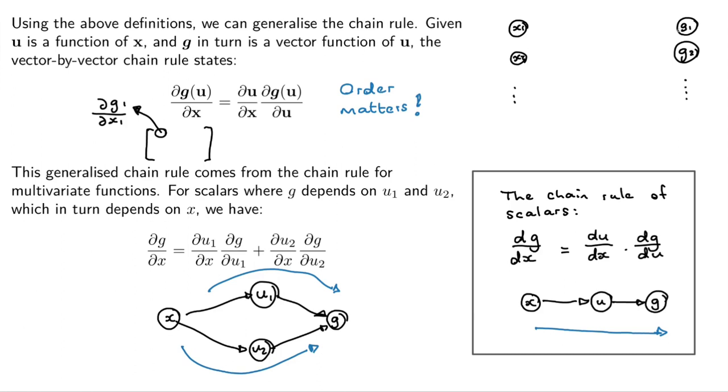Now, the important thing here is that x doesn't touch g directly. Instead, x goes through another vector u. So you've got u1, u2, and so on. So x, this vector, influences u. So u1 is a function of x1 and x2 and x3. And so is u2. U2 is also a function of x1, x2, x3, and so on. g1 is a function of the vector u. So g1 depends on u1, u2, u3, and so on.